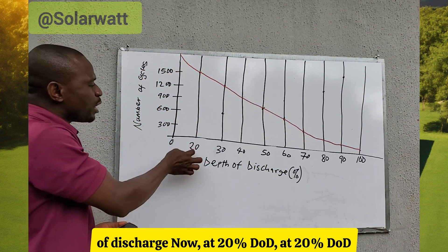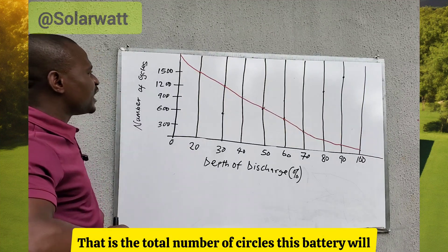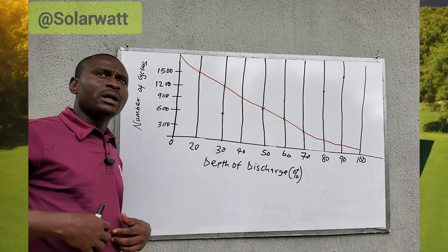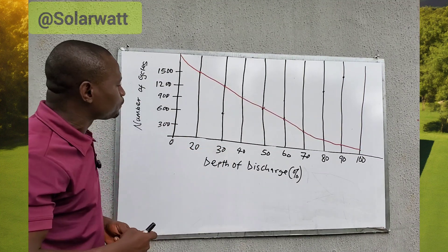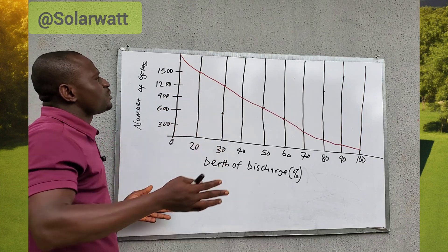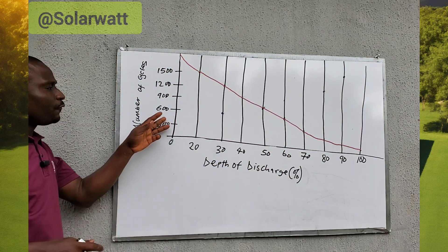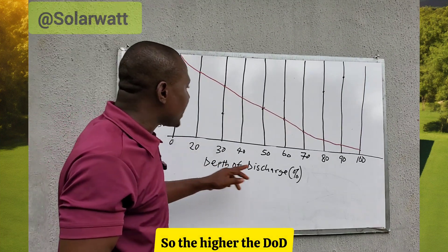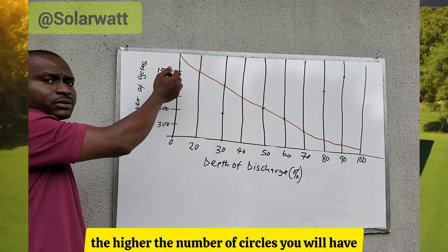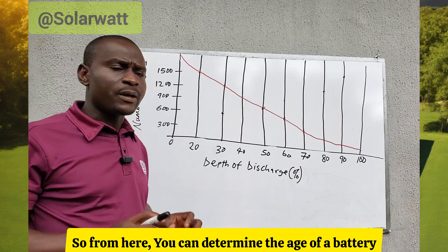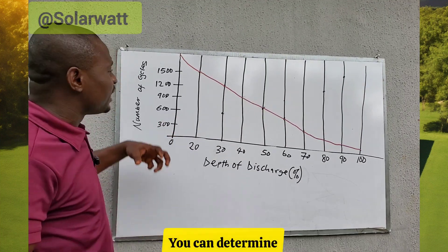At 20% DoD, you can see from the chart that the number of cycles is 1,500 — meaning this battery will give 1,500 cycles. At 30% DoD, this battery gives about 1,400 cycles. At 80% DoD, the cycles drop to about 400–450. So the higher the DoD, the fewer cycles you get, and the lower the DoD, the more cycles. From this chart you can determine the age of the battery depending on the DoD you choose.